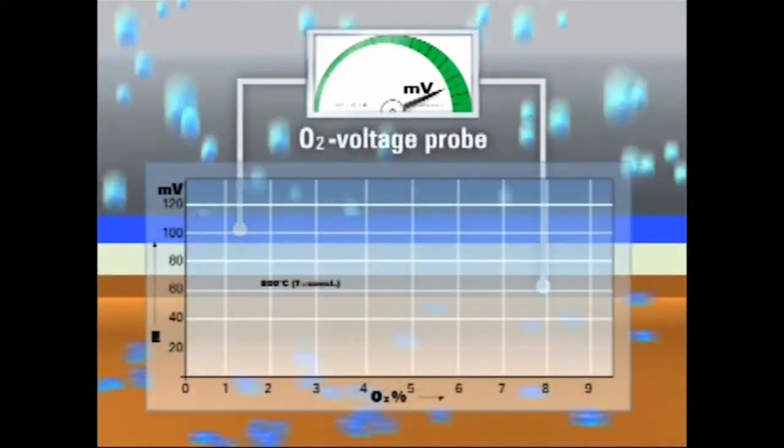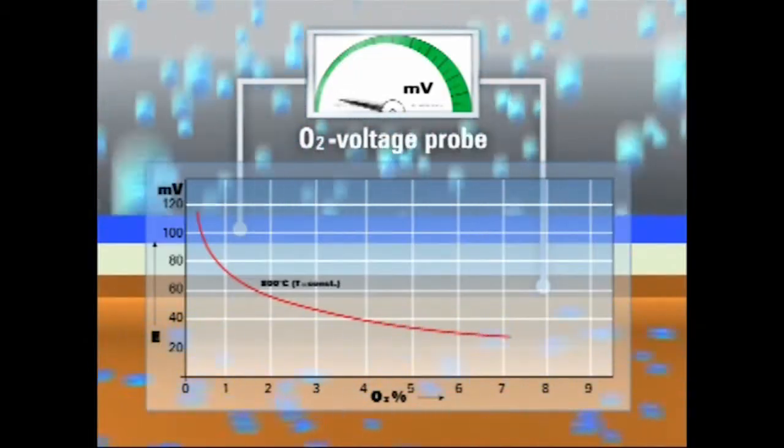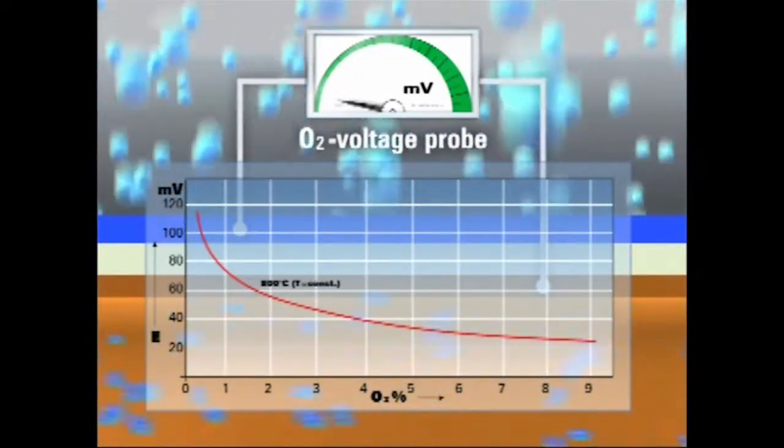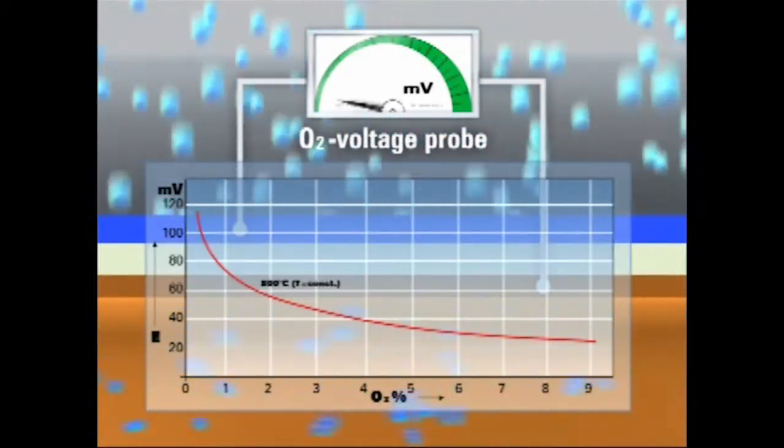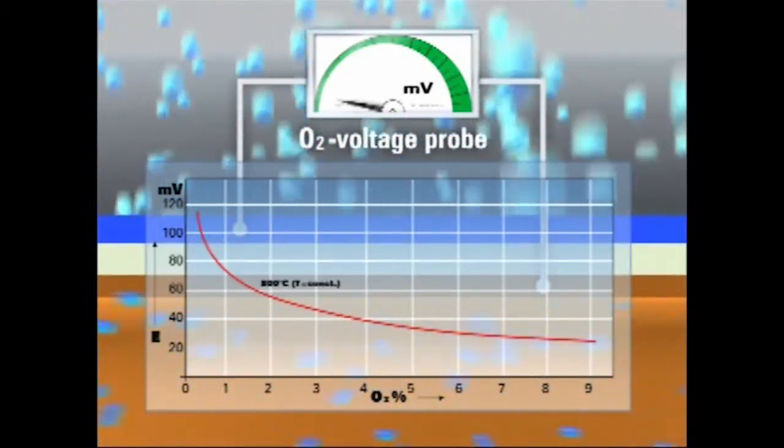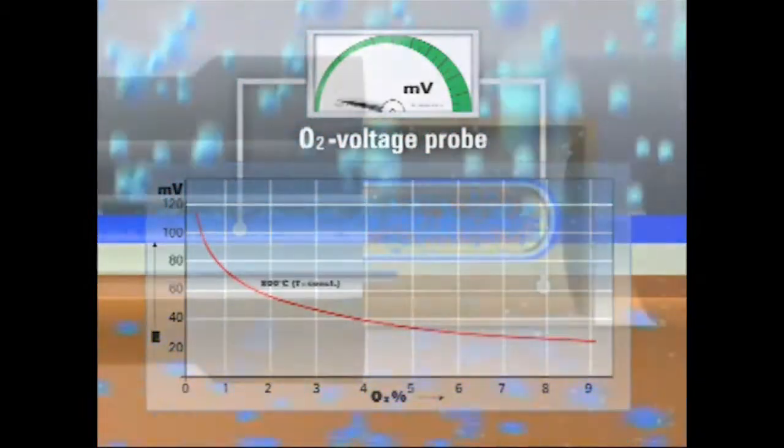The calibration of voltage probe has to be carried out with air and additional test gases due to the logarithmic characteristic line. This results in increased servicing costs.